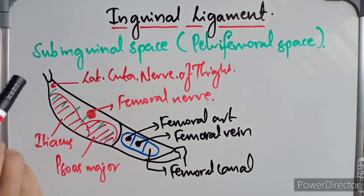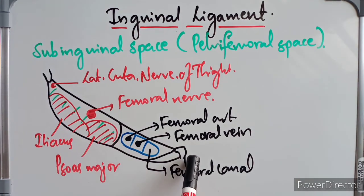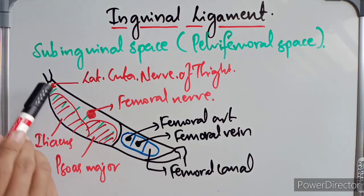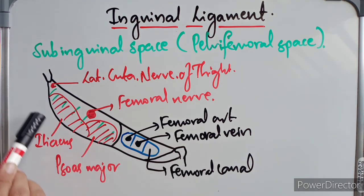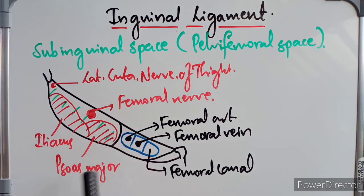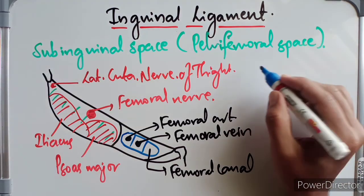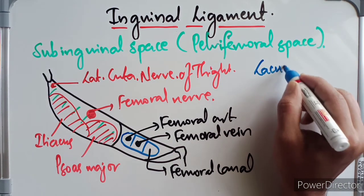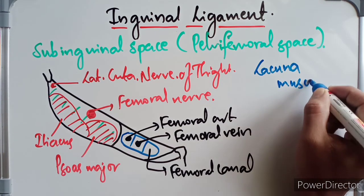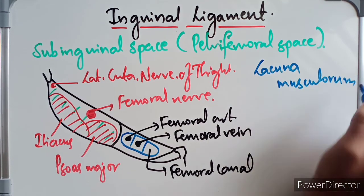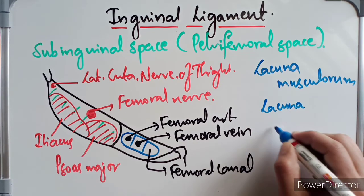To summarize: from the anterior superior iliac spine to the pubic tubercle runs the inguinal ligament. Below it is the iliopubic tract. Between the inguinal ligament and the iliopubic tract are the ilioinguinal ligament, the pectineal ligament, and the lacunar ligament. The sub-inguinal space is divided into two main chambers: the lacuna musculorum and the lacuna vasculorum.